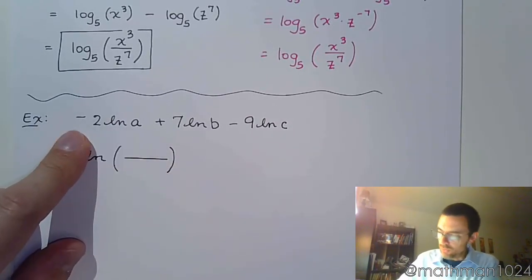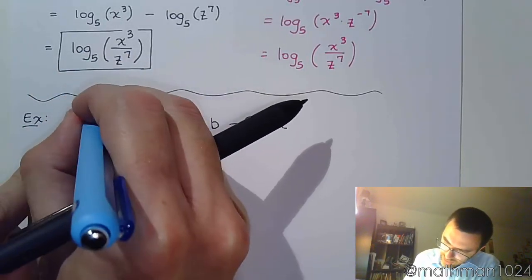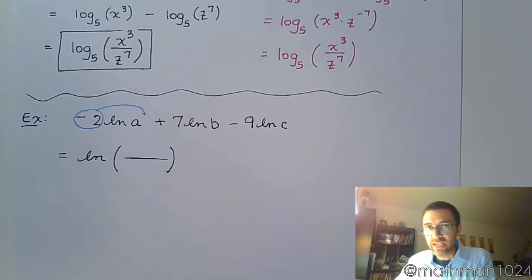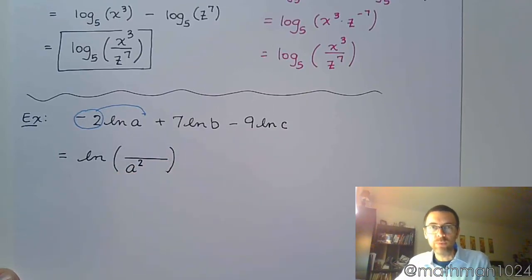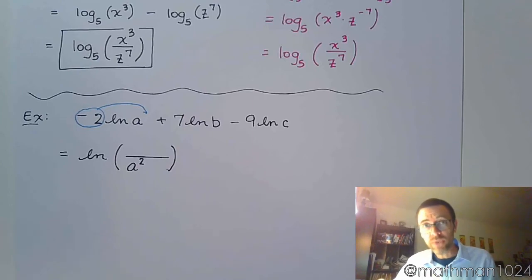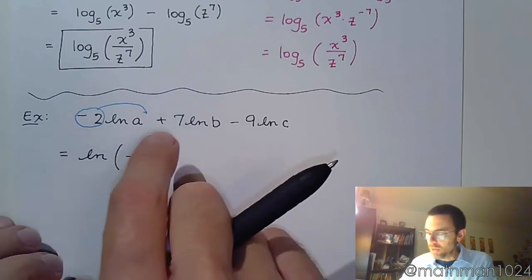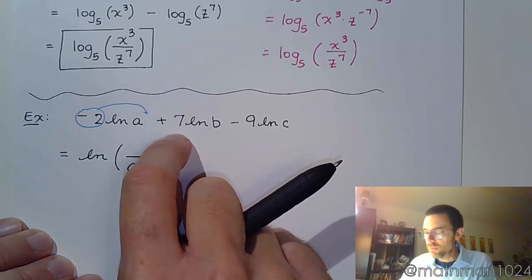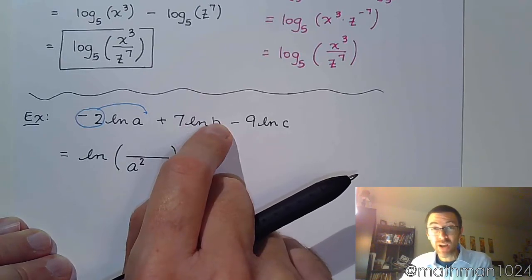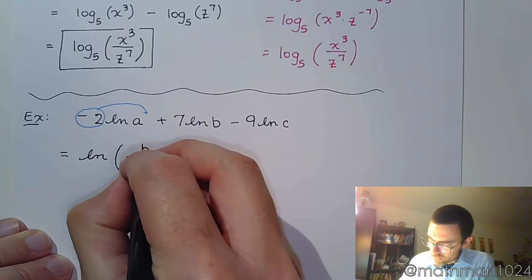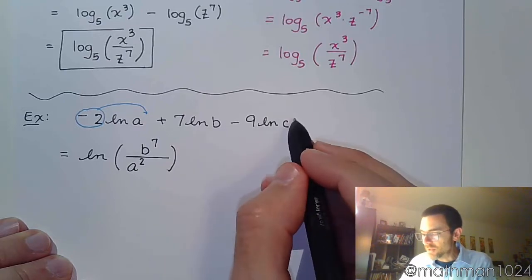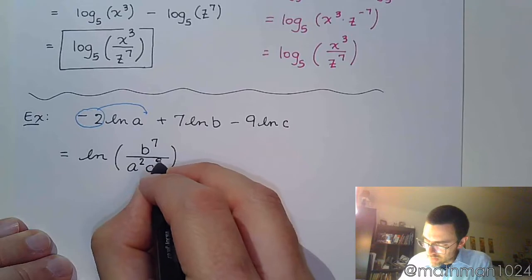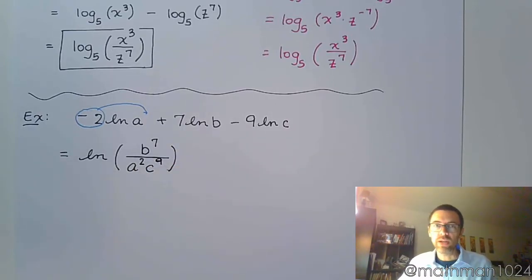This negative 2, you imagine the whole negative goes up here as the power, so that's going to be a to the negative 2nd, which means you'll have a squared in the denominator. Those negative powers and negative coefficients mean you're going to have something in the denominator inside that logarithmic expression. But here, this is a positive 7, so you move that back up here, that's b to the 7th. It's a positive 7, so that guy ends up in the numerator. Here you have another negative power, so that negative 9 on the c forces that c to be in the denominator, c to the positive 9th.